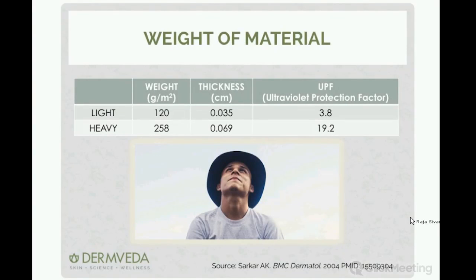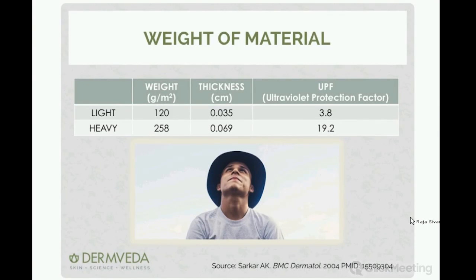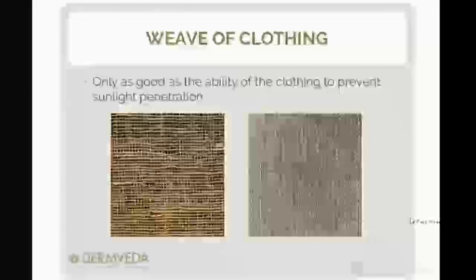Of course there comes a point in summer where you can't be wearing heavy jackets, but if you have a choice between two t-shirts and one is slightly thicker but still comfortable, go with the thicker one — especially if you're going to be outdoors. For the weave, it's important how tightly packed the knitting is. You can see that loose knitting has many holes through which sunlight passes easily, while tight knitting prevents much more UV from getting through.